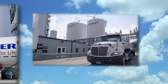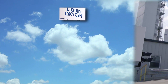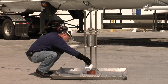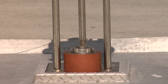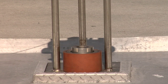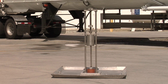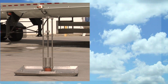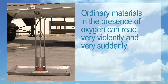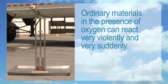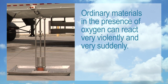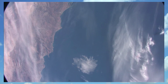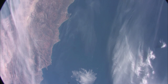Despite being used so widely for numerous applications, oxygen is probably the most frequently mishandled and misunderstood of all industrial gases. Many times, people who should know better refer to oxygen as air, and this is a very dangerous mistake. Ordinary materials in the presence of oxygen can react very violently and very suddenly. Therefore, we want to make sure that we use the proper materials in the design of our installations. Oxygen is not air, but it's a major component of the air needed to support life.